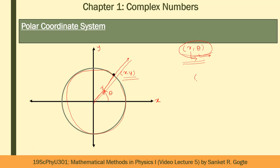There is one more difference between polar and rectangular coordinate systems. In rectangular coordinates, both x and y have the same dimensions — both are lengths. In polar coordinates, r has dimensions of length, but θ is dimensionless — it is an angle, specifically a rotational angle. That is one more key difference between the two systems.